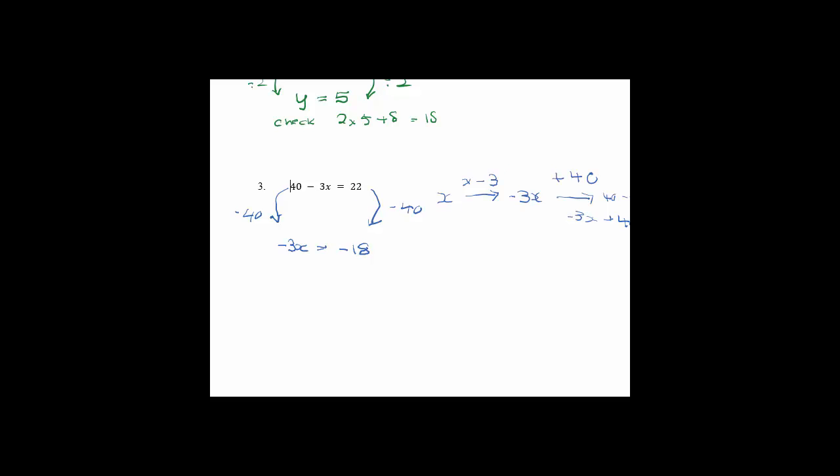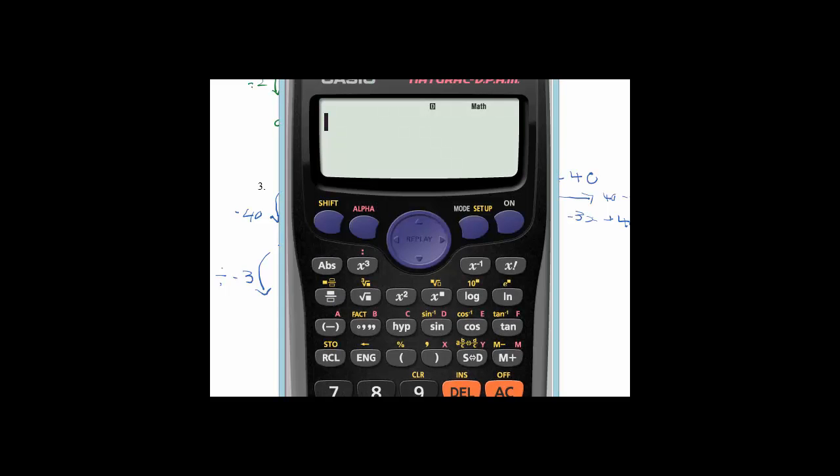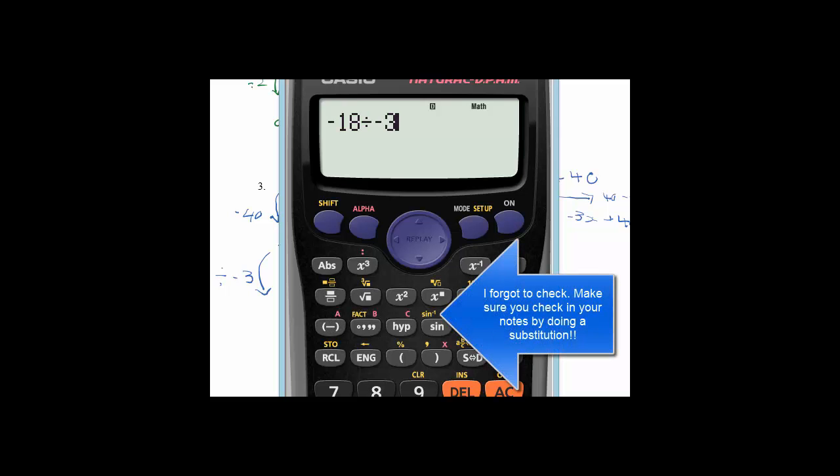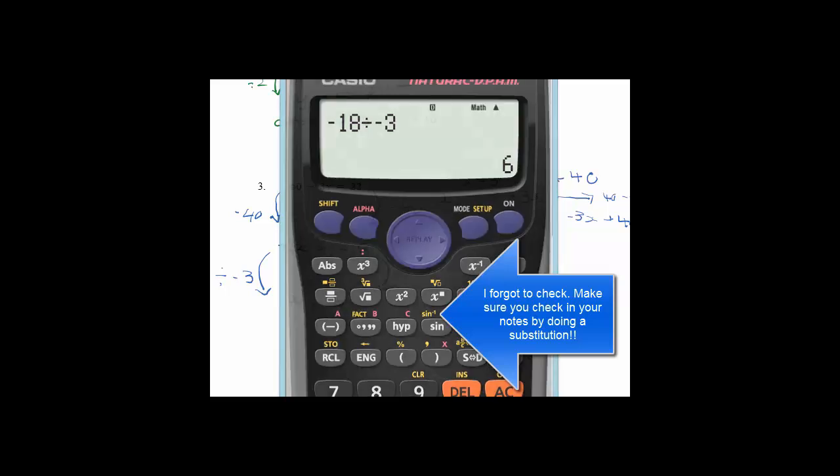OK. And then what happened? Well, the opposite we multiplied by negative 3. So now we have to divide by negative 3, and divide by negative 3, and I'm missing that minus sign there. So negative 3 and 3, they cancel out. So I'm left with x equals negative 18 divided by negative 3. And once again, you could use your calculators, grab that out, and we have negative 18 divided by negative 3, and you can see we get the answer of 6.